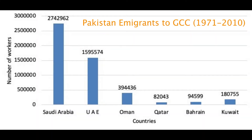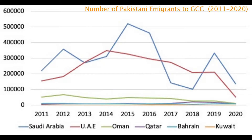Besides Saudi Arabia and the UAE, Pakistanis also migrate to Oman, Qatar, Bahrain, and Kuwait. Looking at the data, for most GCC countries the numbers stayed pretty stable from 2011 to 2020, though with Saudi Arabia there have been more fluctuations in the number of Pakistanis over that period.